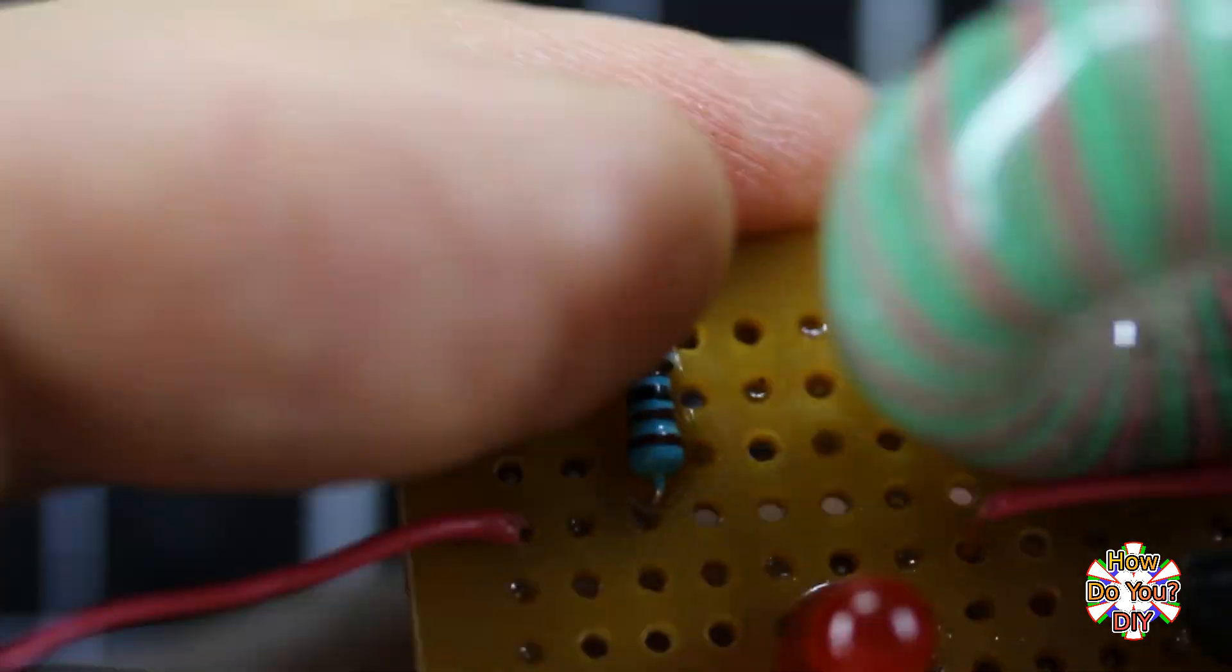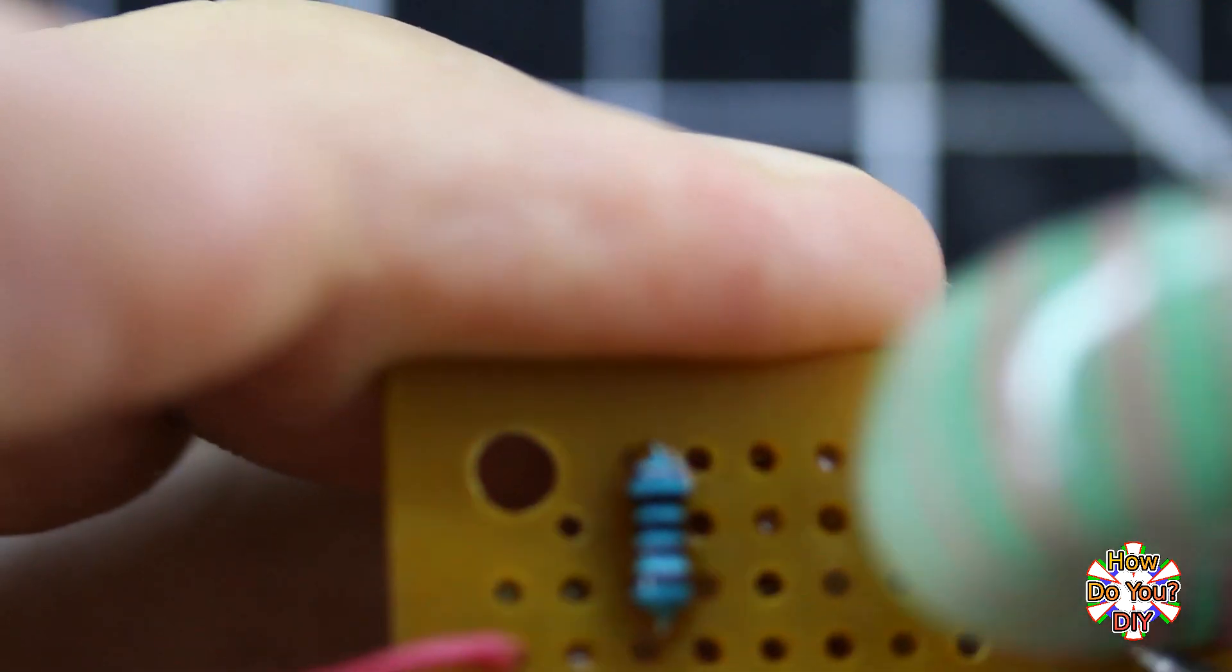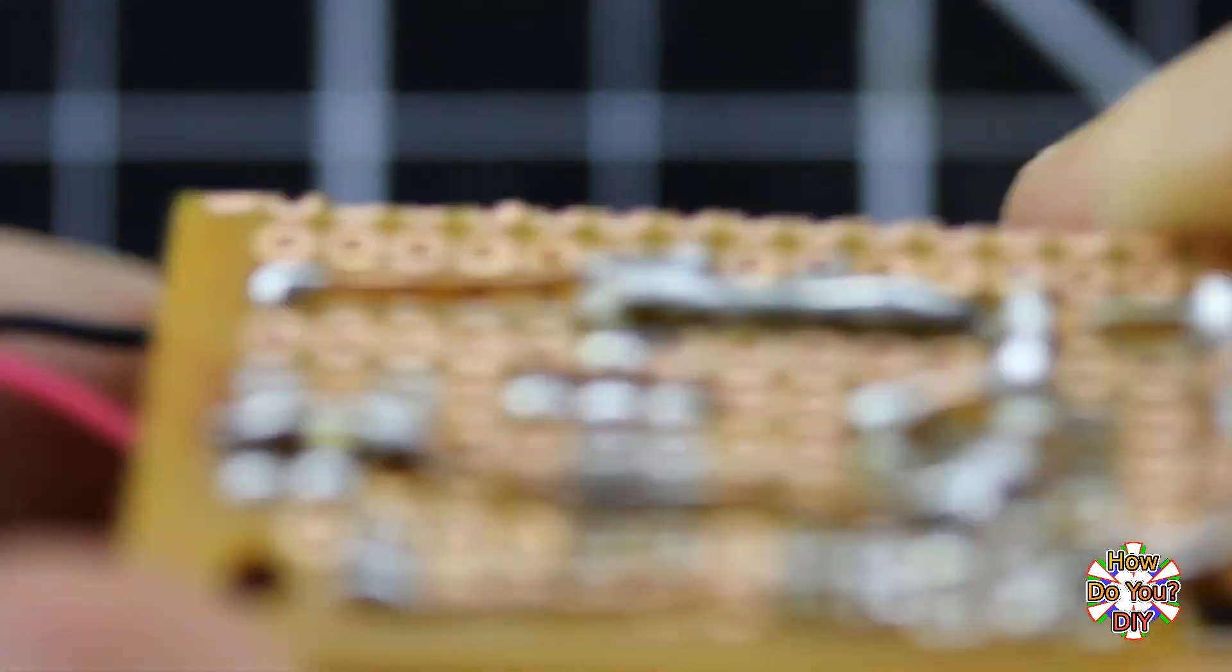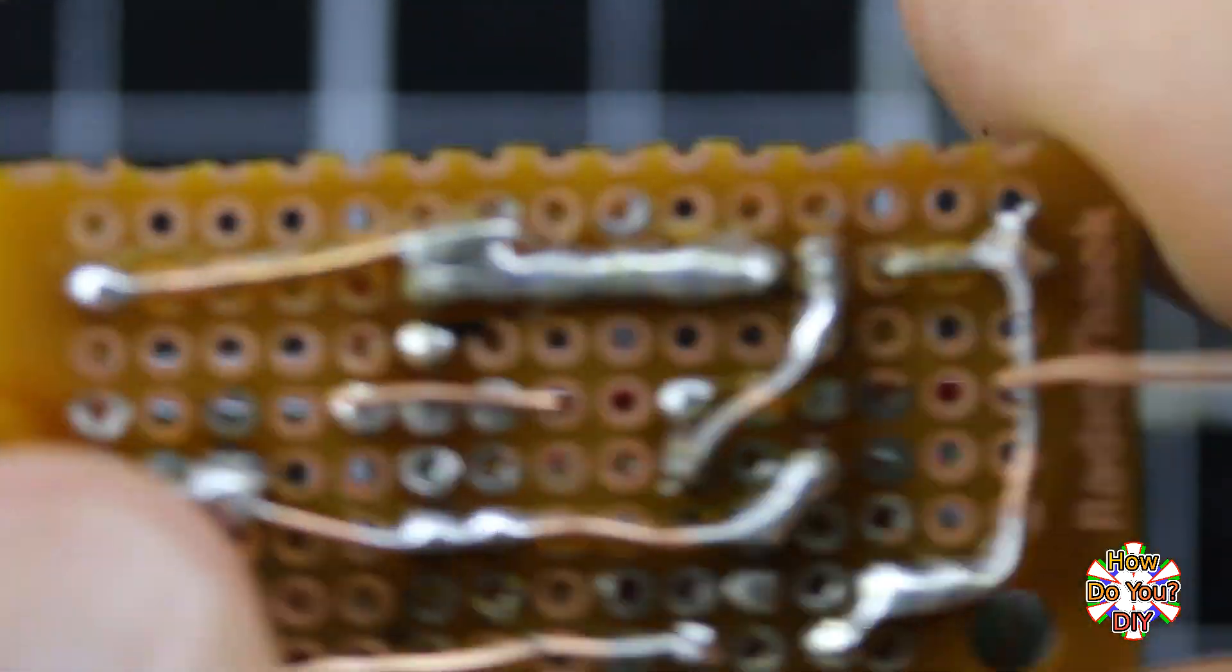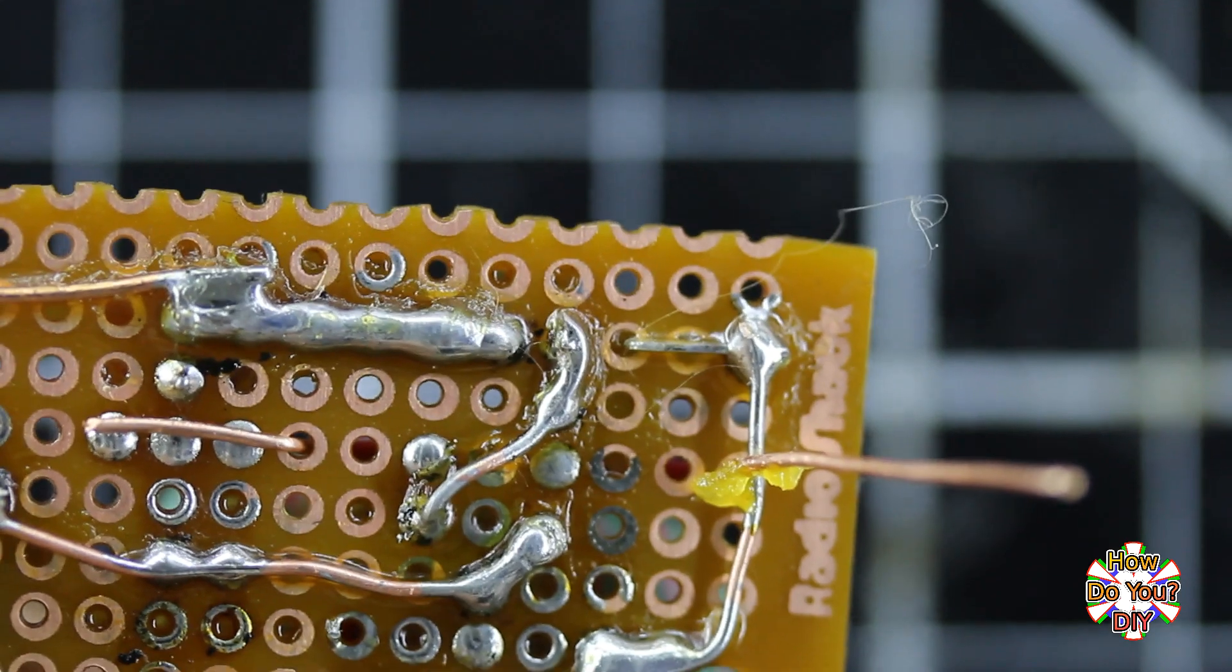As I'm doing this, I'll explain what a joule thief is. A joule thief takes a low DC voltage and boosts it up to a higher voltage. You can even take a battery that other devices will consider to be drained and get a bit more of the energy out of it.